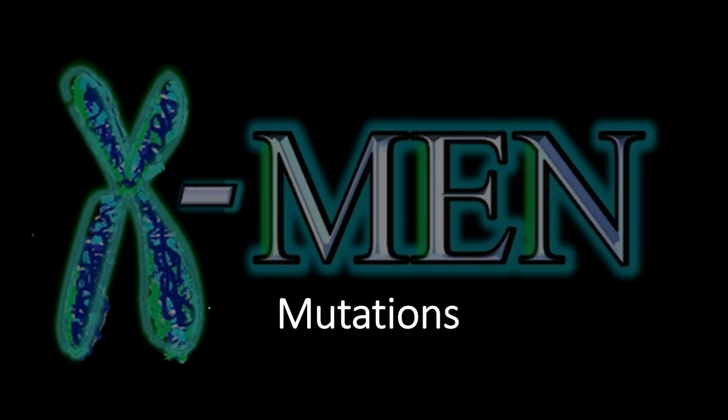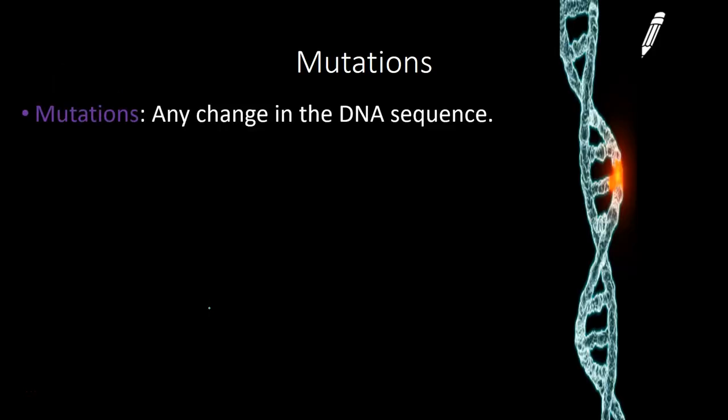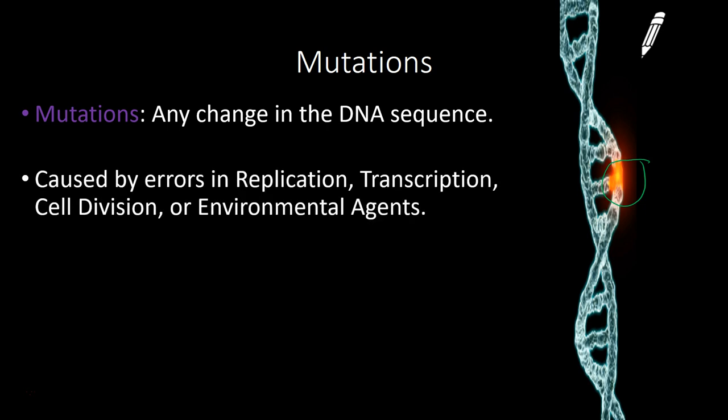What's happening folks, it's Rouge again. Today we're talking about mutations. We just finished talking about protein synthesis — how the sequence of DNA leads to an actual protein. Today we're going to talk about what happens if that sequence of DNA is changed or altered. The definition of a mutation is any change in the DNA sequence — any change in the combination of adenine, thymine, guanine, and cytosine.